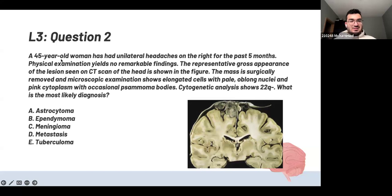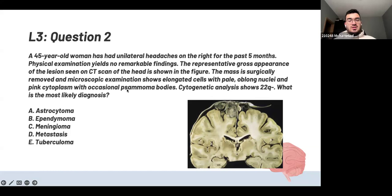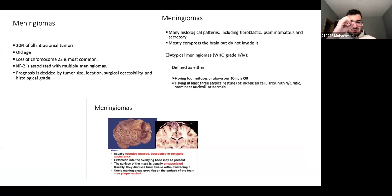A 45-year-old woman has unilateral right-sided headaches for five months. CT shows a mass; it's surgically removed. Microscopy shows elongated cells with pale oblong nuclei and pink cytoplasm with occasional psammoma bodies — very important. Cytogenetic analysis shows 22q deletion. The answer is meningioma. Even without the picture, psammoma bodies immediately point to meningioma. Loss of chromosome 22 is the most common cytogenetic finding. They can ask about any of these features.